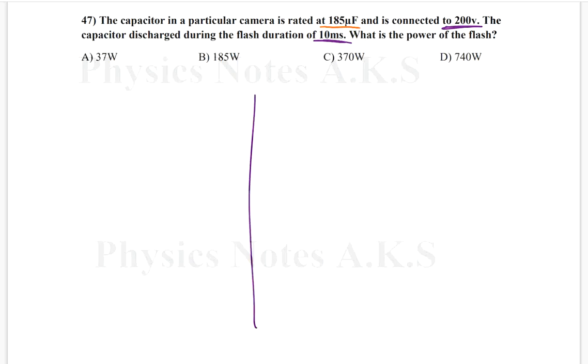First of all, let me change the time from millisecond to second. It's going to be 10 times 10 to the power negative 3. Or we can divide by 1000. Basically, it's the same. Now, the power—I know the formula of power in general is energy over time.